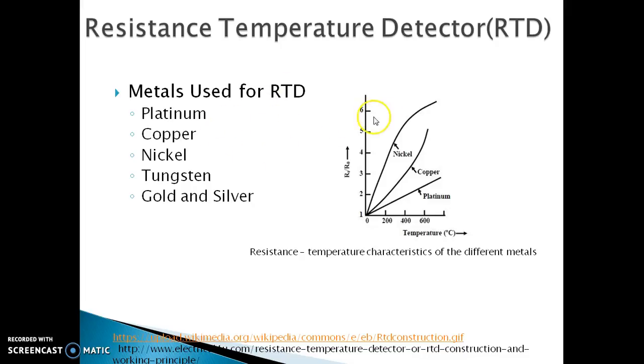Here, you can see that platinum has a very linear characteristics whereas copper and nickel are completely non-linear. And that's the reason why nickel RTDs are very small range and are very cheap. We also have tungsten represented by the red line which is also a linear characteristics.